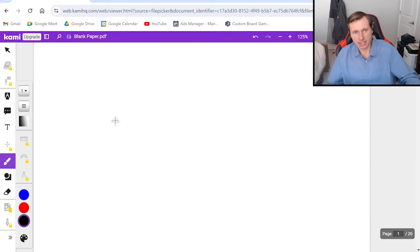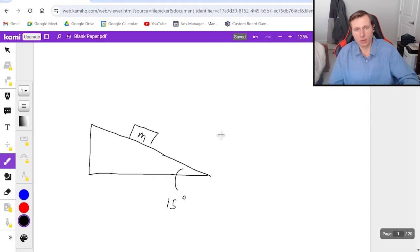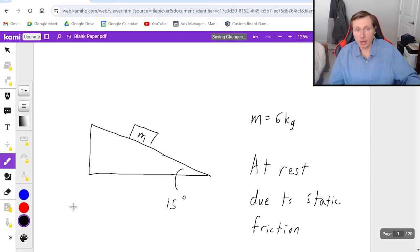The first example I have today, it's a good one. I have a box on a ramp. This ramp is pretty shallow, it's not very steep. We'll say it's 15 degrees. And I have a mass where m equals 6 kilograms. And at this moment right here, the box is at rest due to static friction. And my question is, I want you to find the static friction force, Fs.